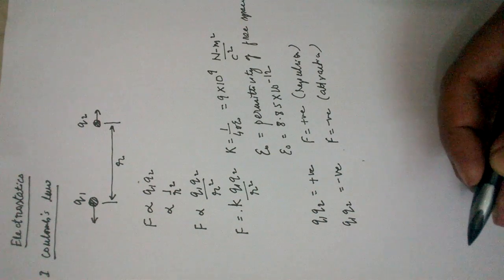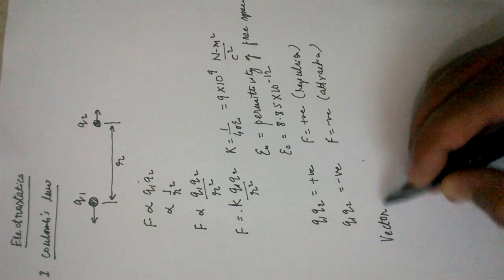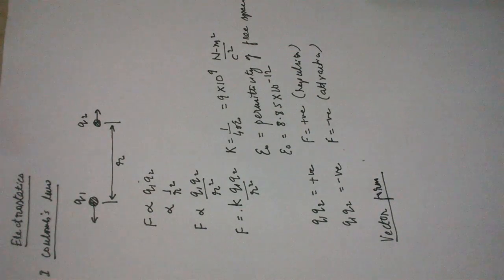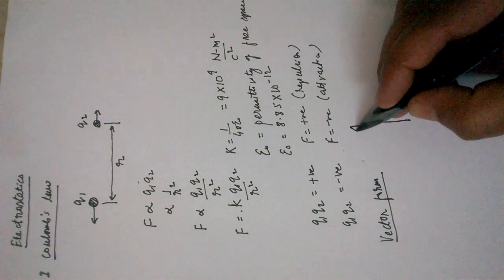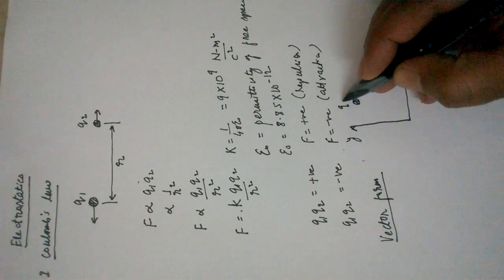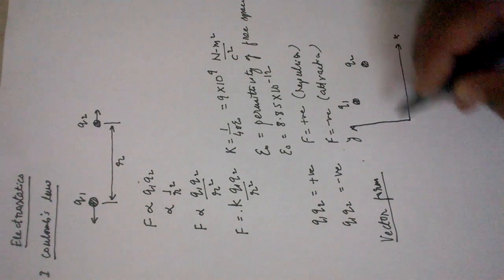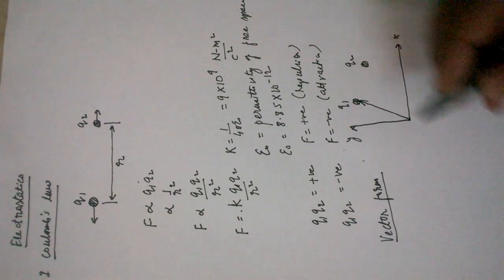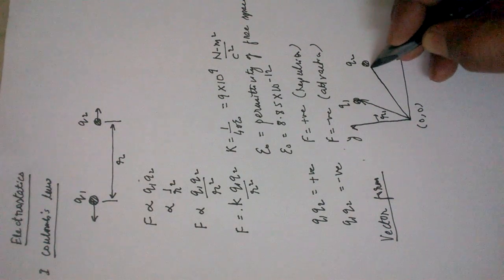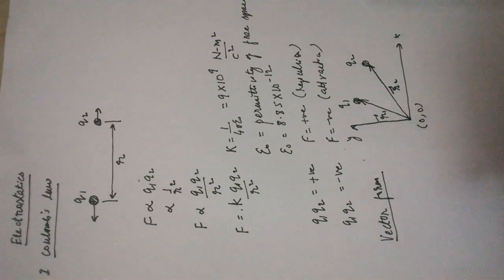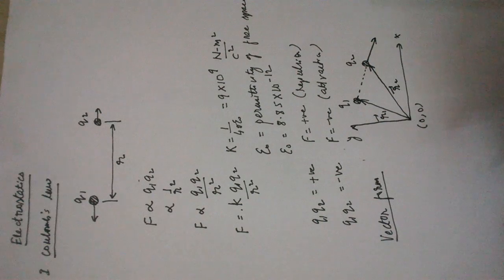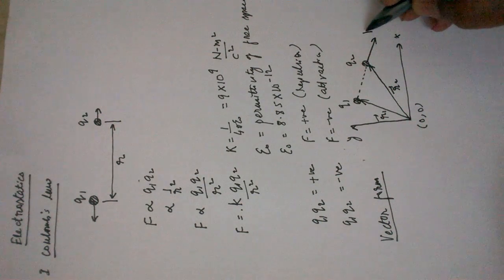Now we come to the vector form of Coulomb's law. Force is a vector quantity, not a scalar. Suppose we take a coordinate system with x-axis and y-axis. I place one charge Q1 and another charge Q2. The position of charge Q1 measured from the origin is R1 vector, and the position of charge Q2 measured from origin is R2 vector. If both charges are positive, the force will be repulsive. The force on Q2 by Q1 is denoted F21.